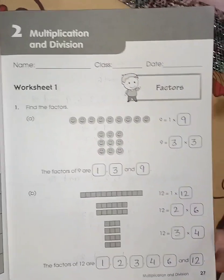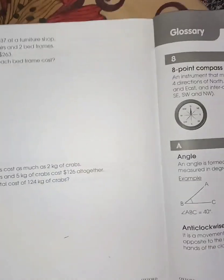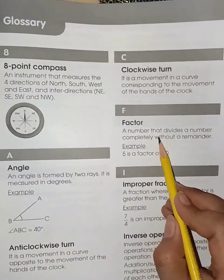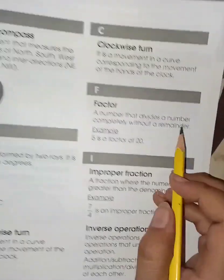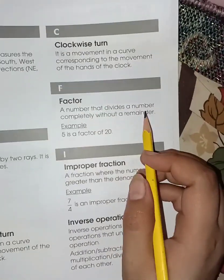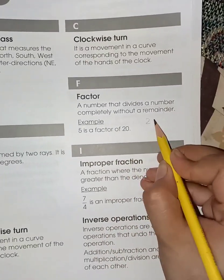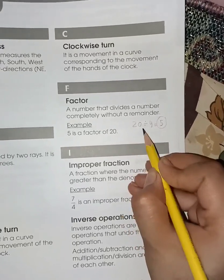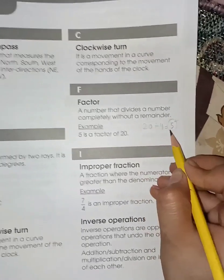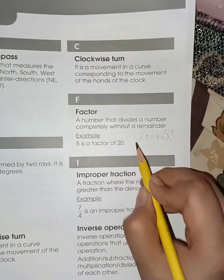So let's find out what is factor. Here you can see the definition of factor at the end of the book, which is a number that divides a number completely without a remainder. It means a number which can divide another number without leaving a number at the end. 5 is a factor of 20. As you can see 20 divided by 5 is 4. So 5 is a factor of 20 because it doesn't leave any number behind or remainder.